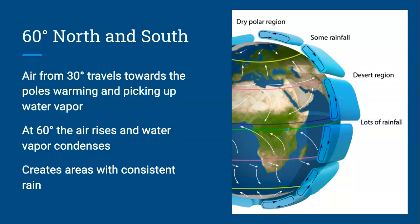And at about 60 degrees north and south, the air is warm enough that it starts rising back into the atmosphere. And as we know, the water vapor will condense and cause precipitation. So at 60 degrees north, again, you have areas with pretty consistent rainfall.